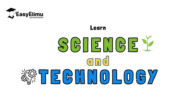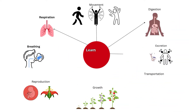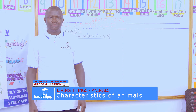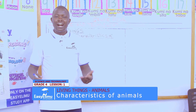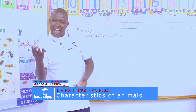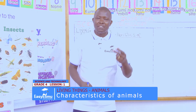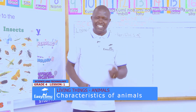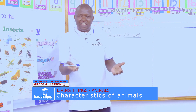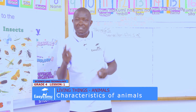The animals in Noah's Ark are coming two by two. Name them: elephant, cat, dog, cow, sheep. The animals in Noah's Ark are coming two by two.